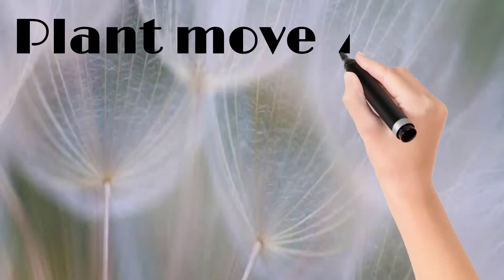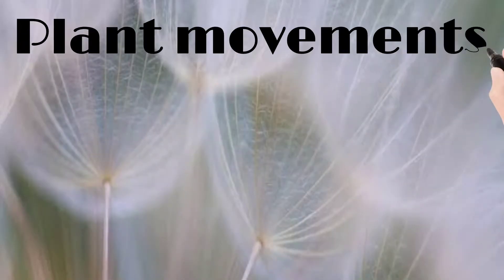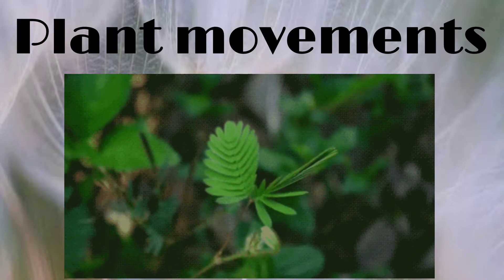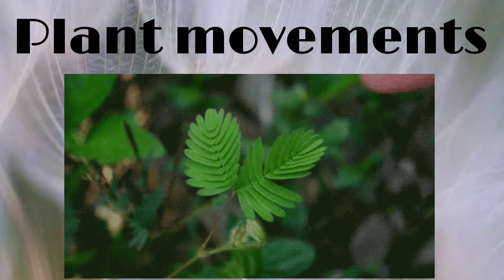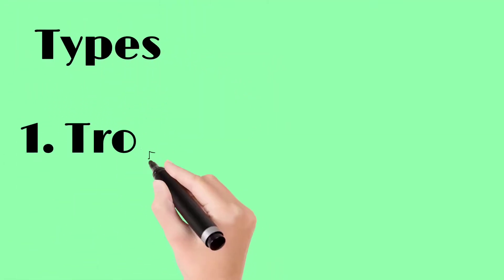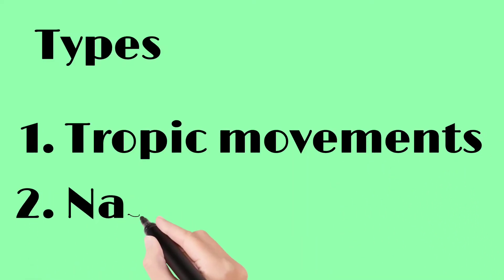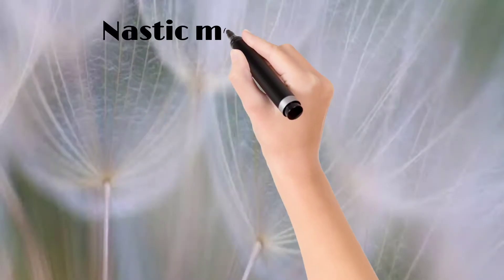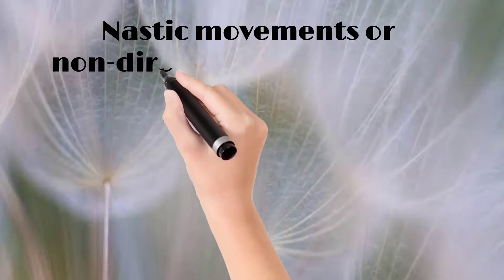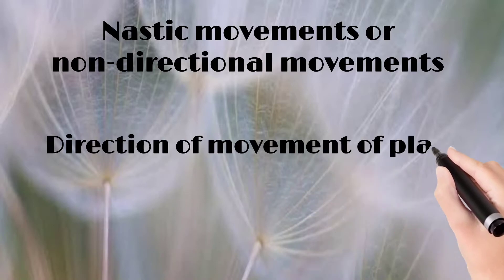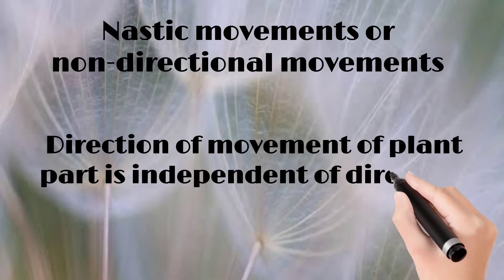In this video we are going to discuss plant movements. Plants make movements in response to external stimuli. Plant movements can be categorized as tropic movements and nastic movements. Here we are going to discuss nastic movements. These are non-directional movements, meaning the movement of a plant part is not determined by the direction of the stimulus.